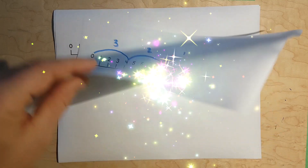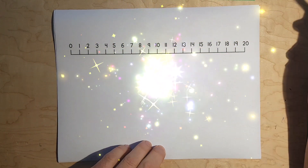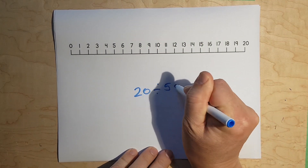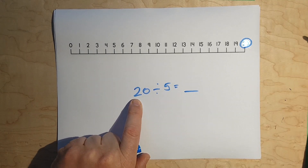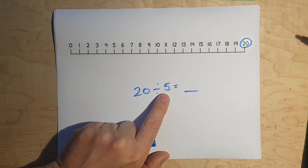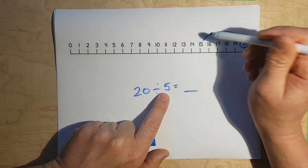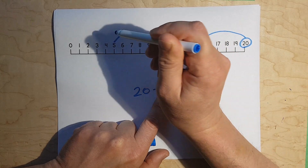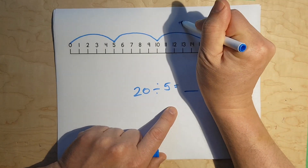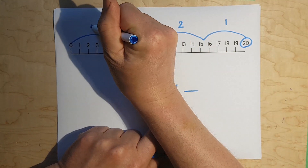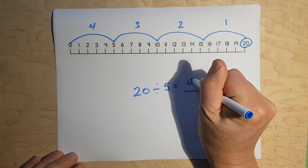Let's do a larger number. Let's do 20 divided by 5. Let's start with our dividend again and circle it. We go by 5. When you skip count by 5 — 5, 10, 15, 20. But we're going backwards, so I go to 15, then 10, then 5, then 0. And how many skips do we have? 1, 2, 3, 4 skips. So, our quotient, or our answer, is 4.